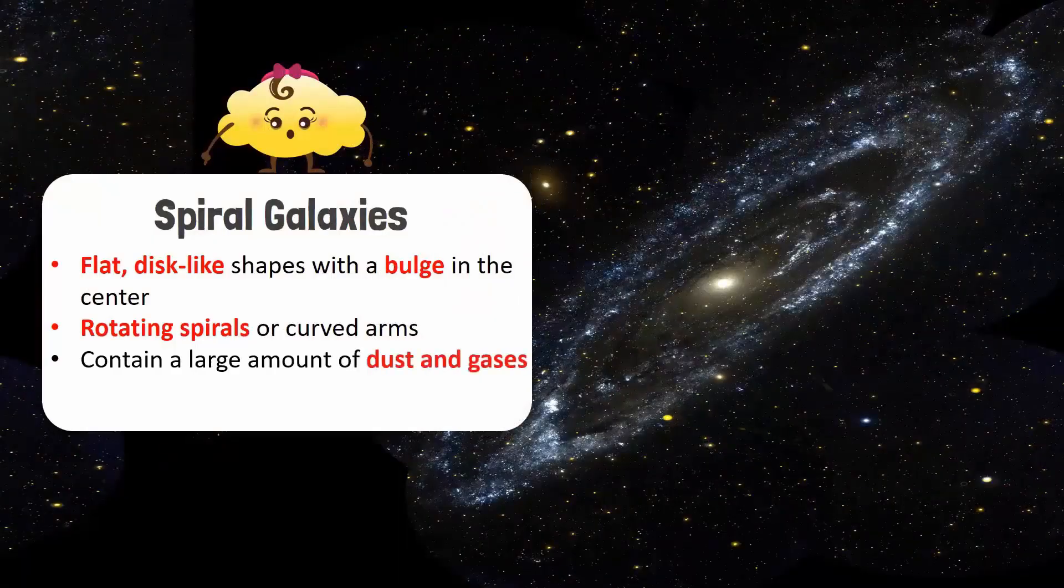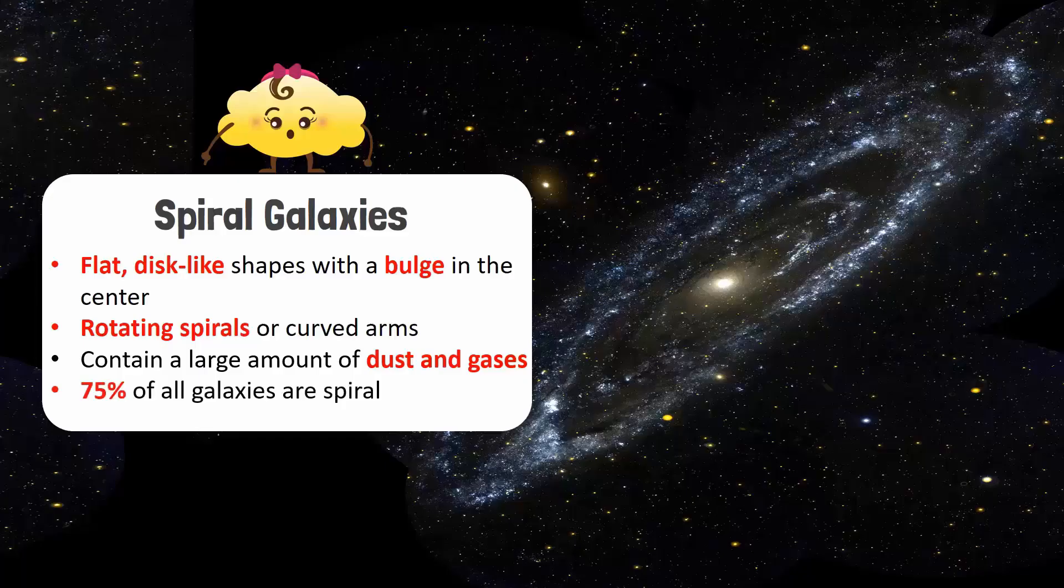Most of the galaxies, about seventy-five percent, are spiral. Our neighbor galaxy Andromeda is a spiral galaxy.